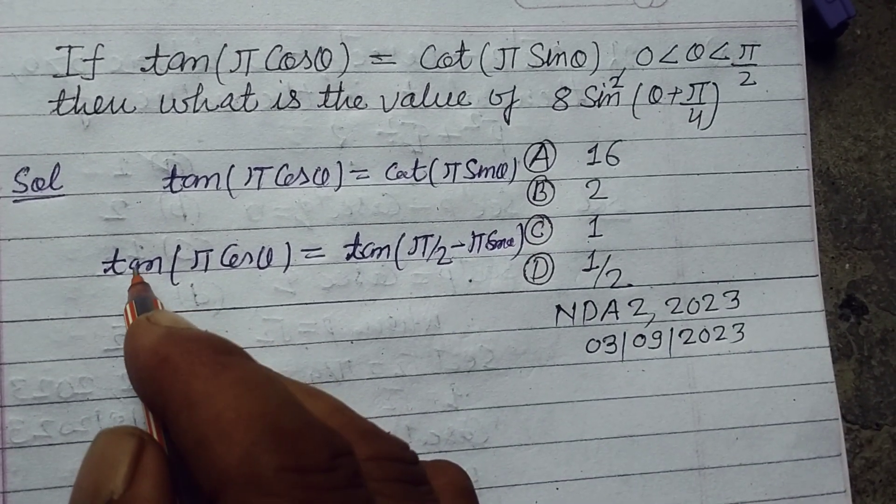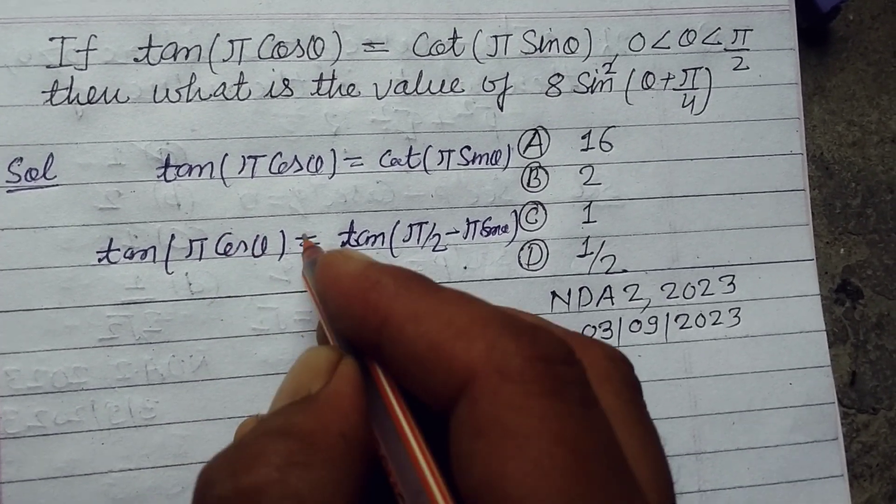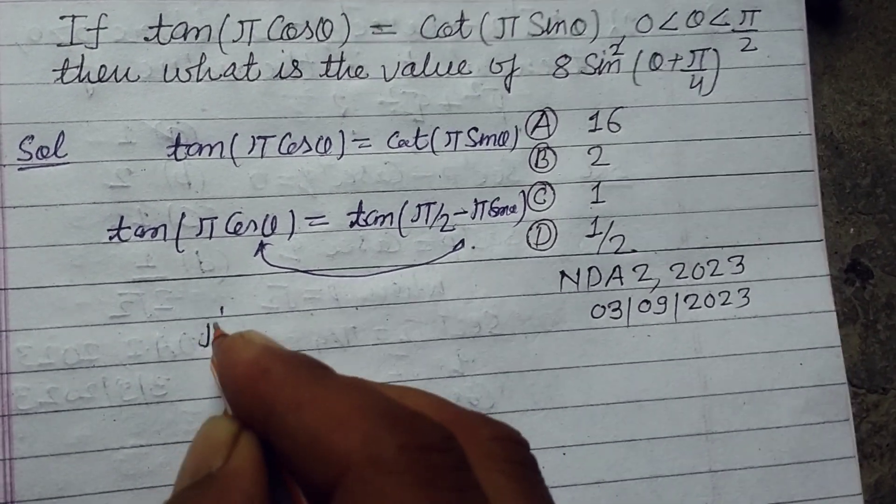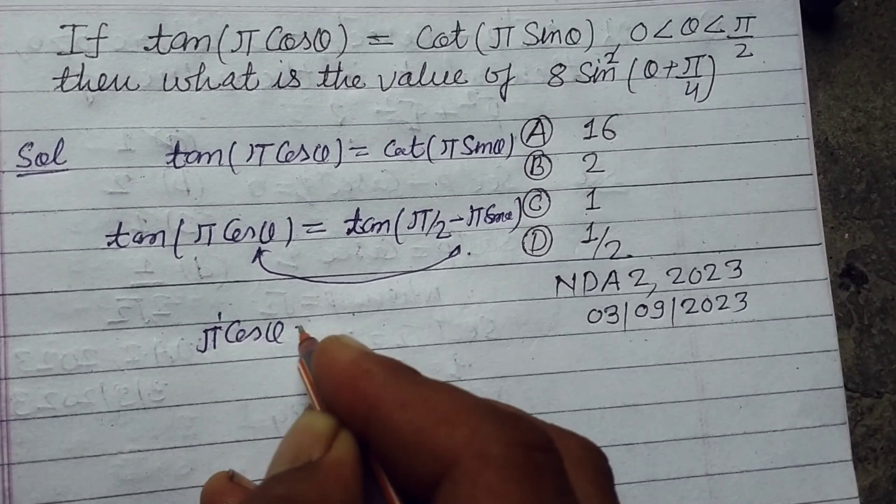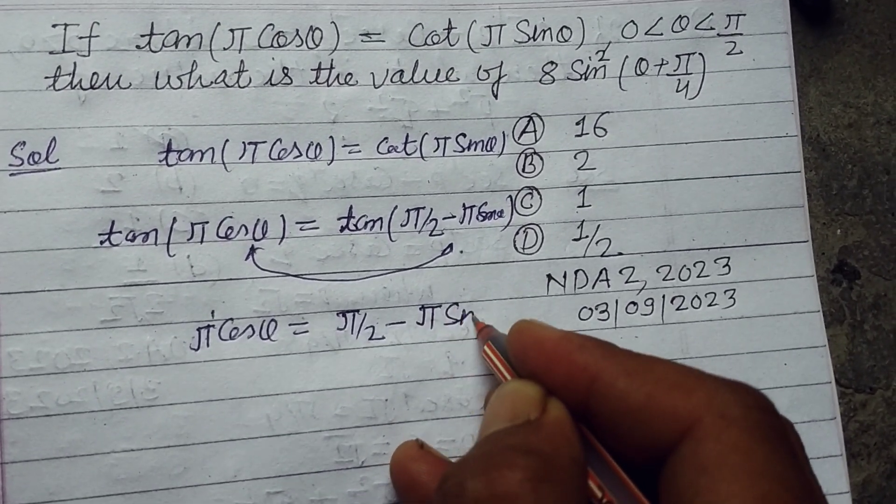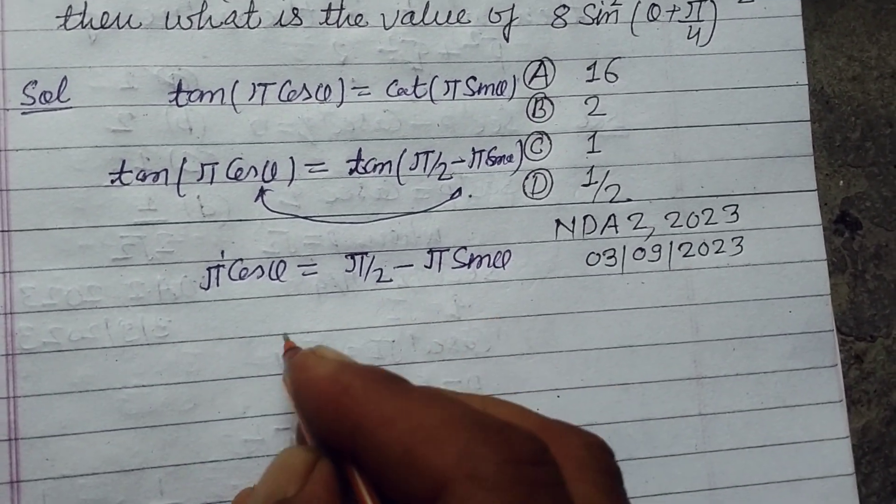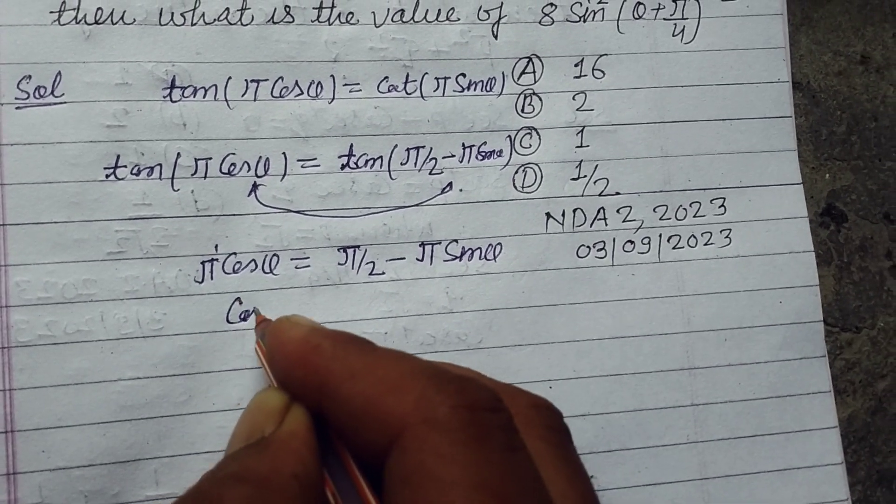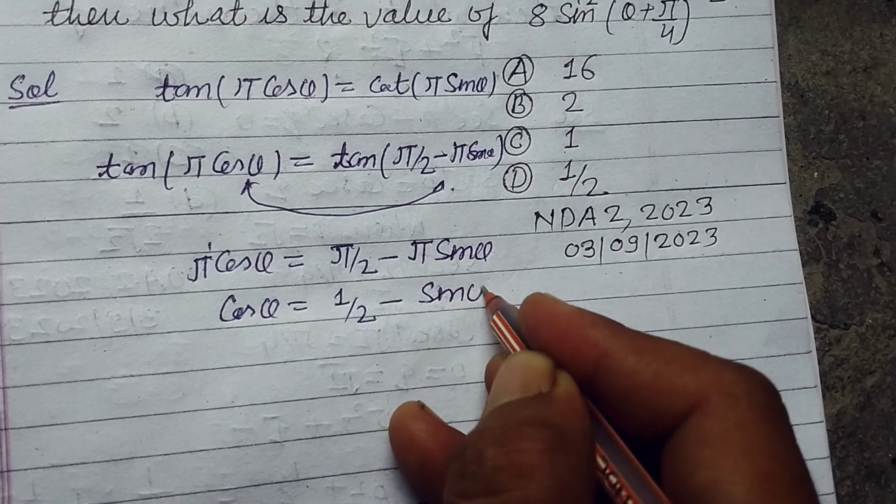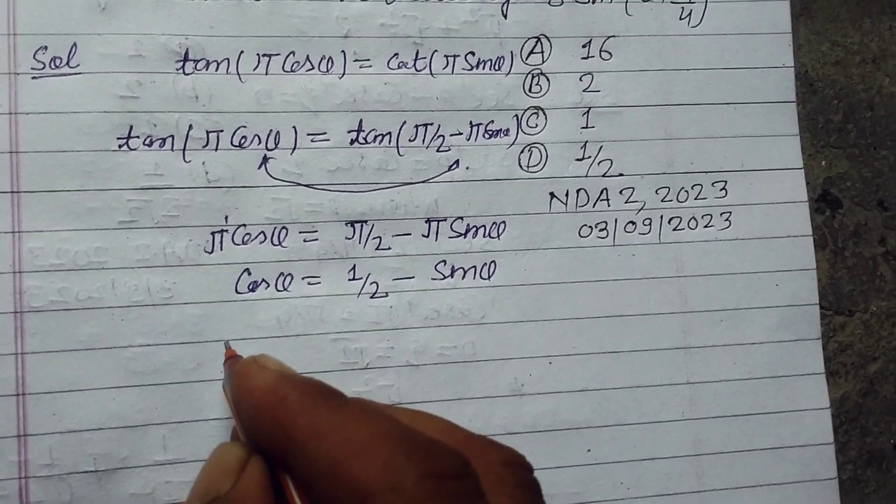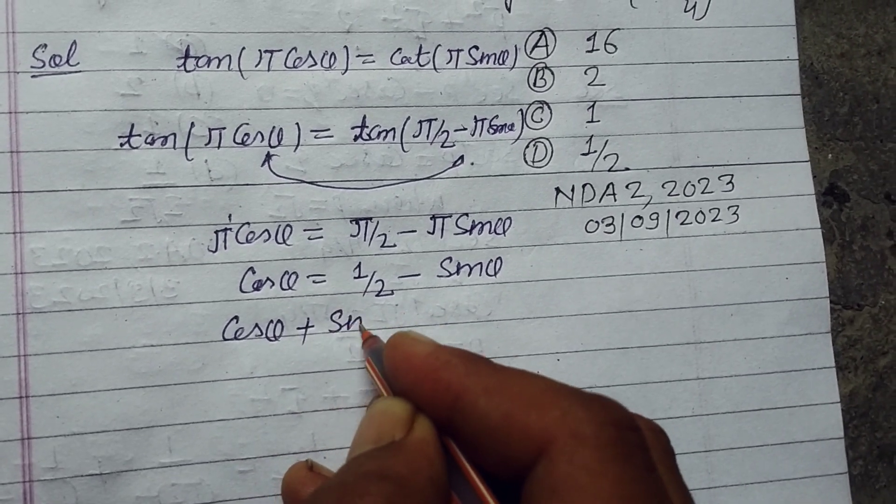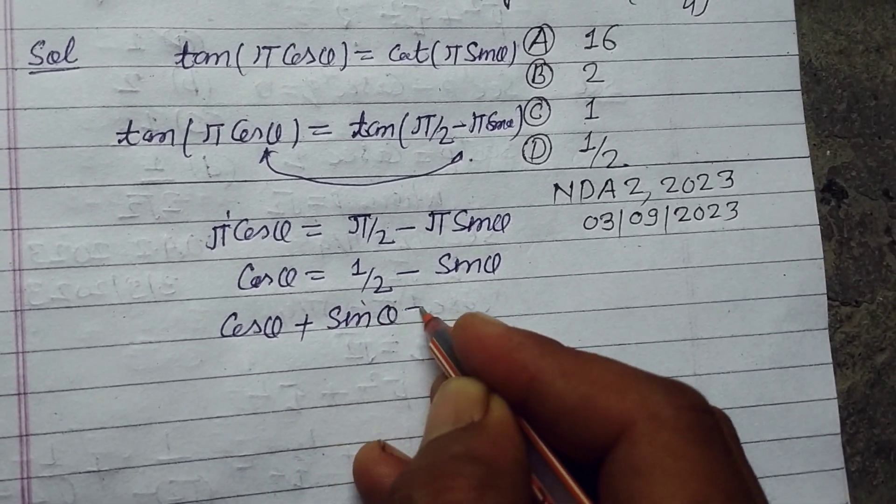Now we remove tan from both sides and compare the angles. So π cos θ = π/2 - π sin θ. Now we remove π from both sides, we got cos θ = 1/2 - sin θ. We bring sin θ to the left side, so it becomes cos θ + sin θ = 1/2.